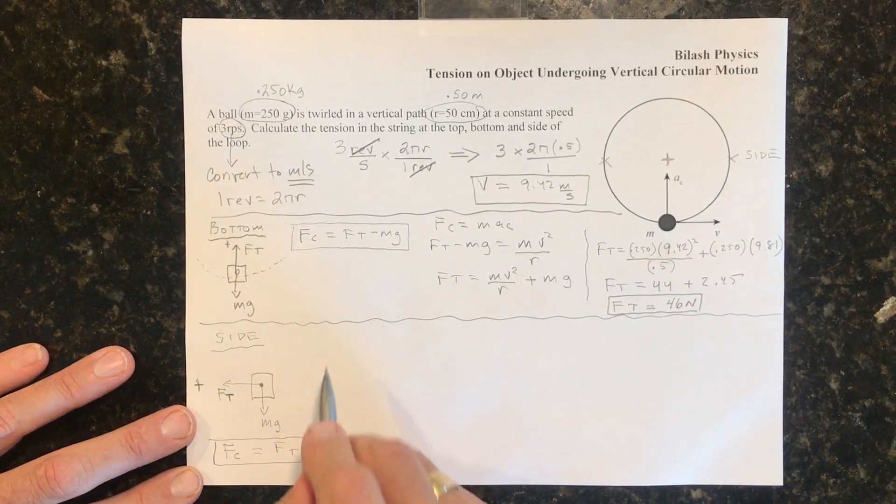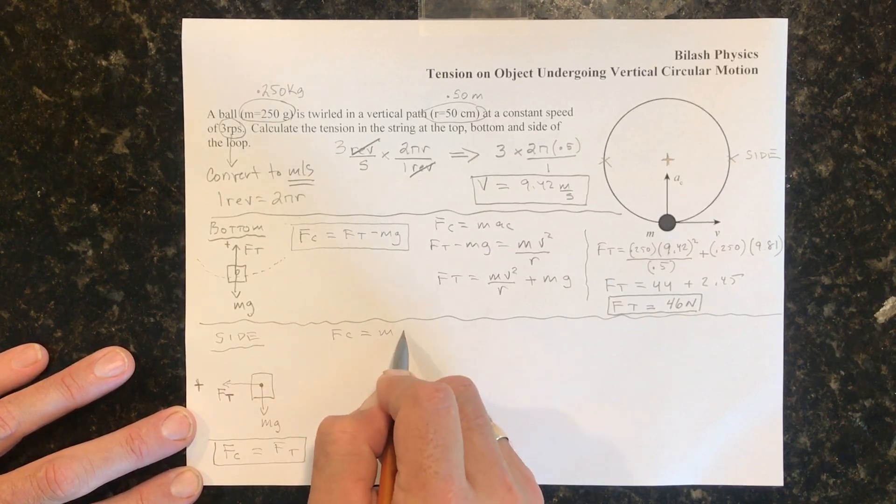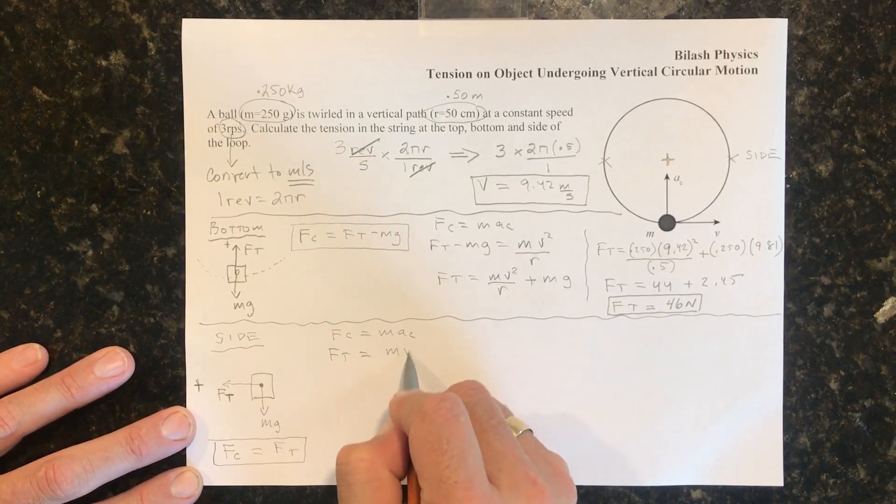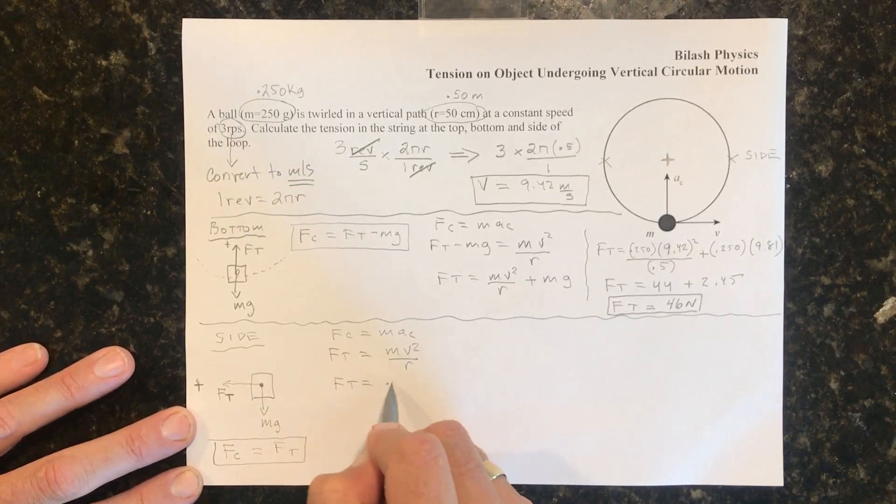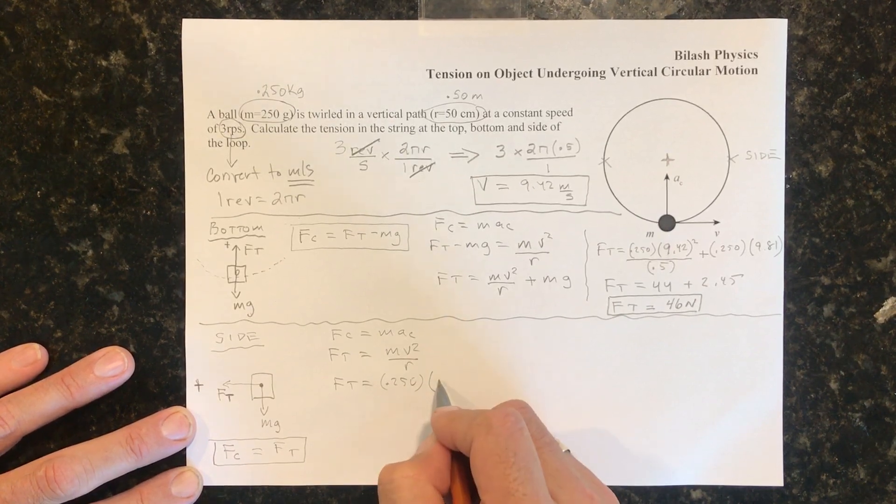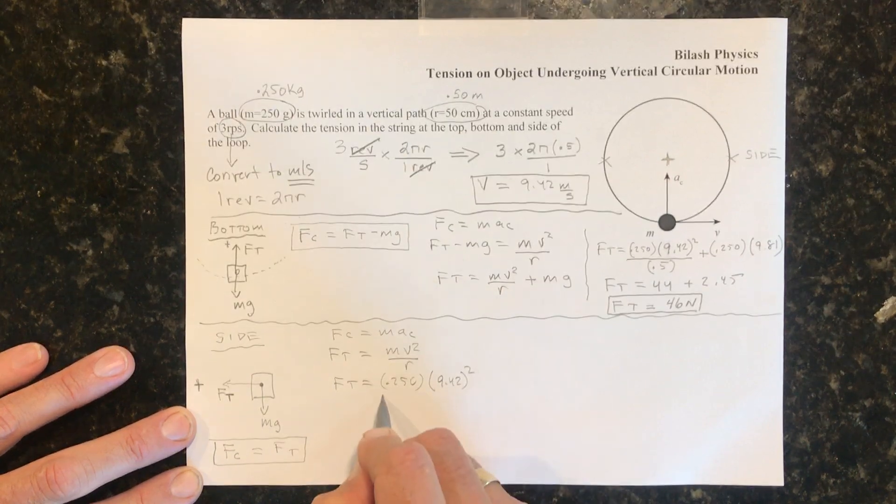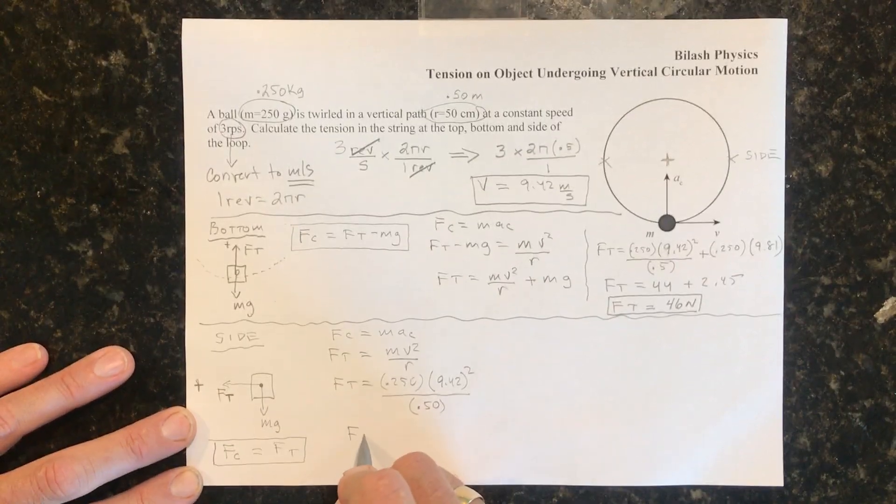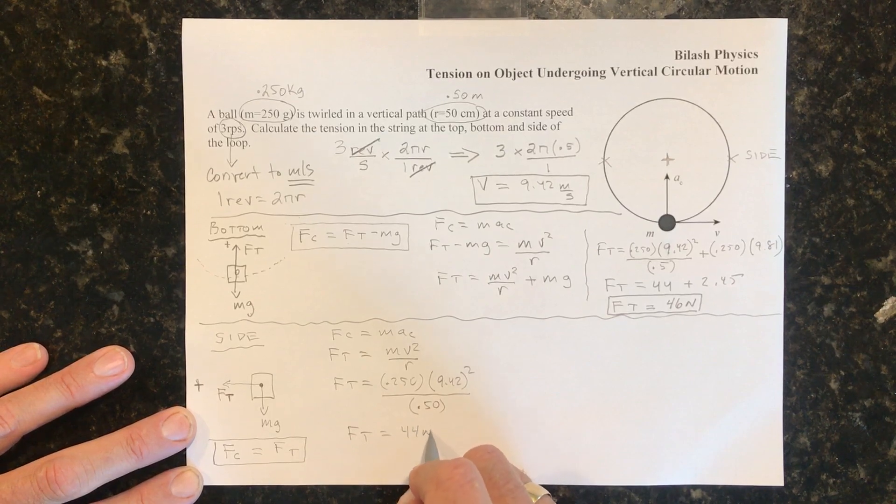So we do the same thing as we did before. We have Fc is equal to mac. In this case, we have the tension is equal to mv² over r. So the tension is equal to 0.250 times the velocity, 9.42 square that, divided by the radius, 0.50.